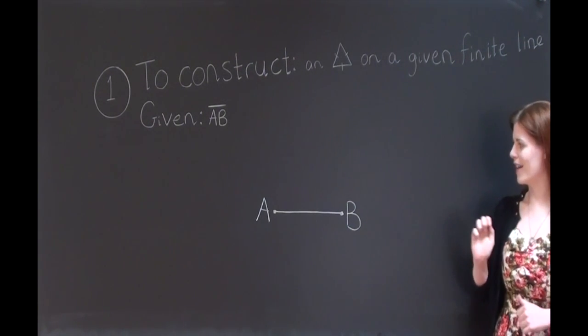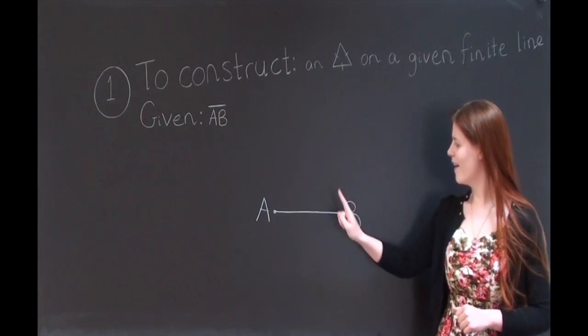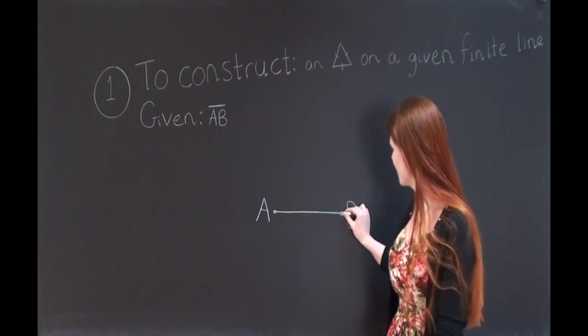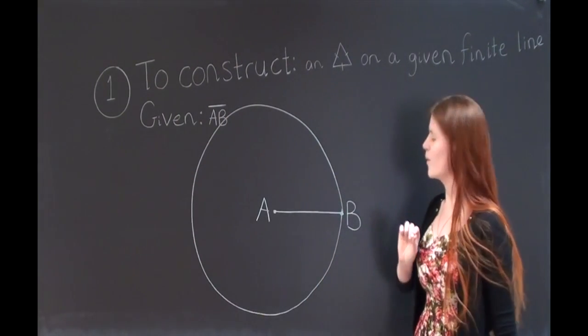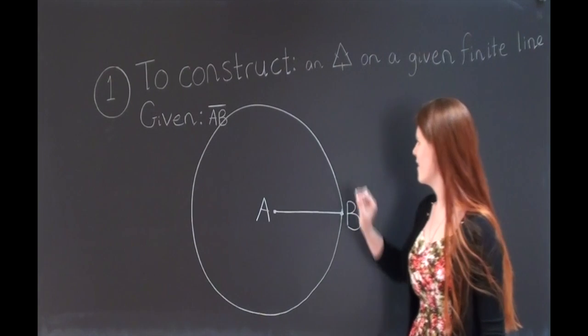To begin, I'm going to create a circle with center A and radius AB, and I'm going to dub the circle BCD.